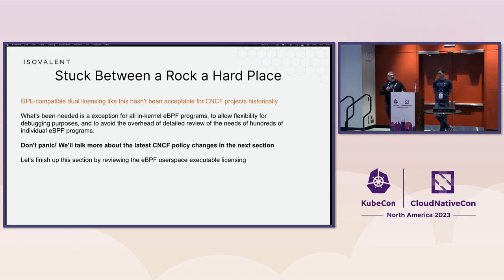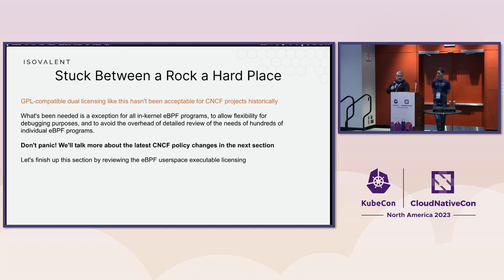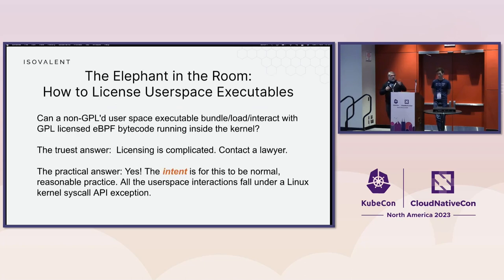But CNCF doesn't actually allow GPL as a license under its IP policy. So programs — or I should say CNCF projects that have used eBPF — have had to ask for an exception. That makes it difficult historically to add eBPF and get it through the process. The other issue, other than the eBPF side, is what do you have to do with the user space executables that are interacting with these eBPF programs? And the truest answer is it's complicated — contact your lawyer. But the documented intent from the Linux kernel developers is that this should be a normal, reasonable practice.